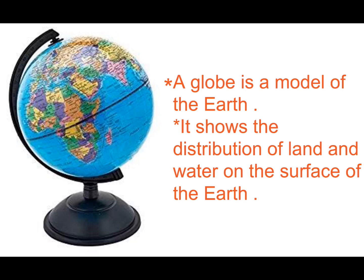A globe is a simple and accurate model of the Earth. It shows the distribution of land and water on the surface of the Earth. We can also see the correct shape, size and location of the continents and oceans on a globe.